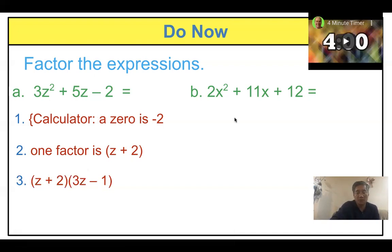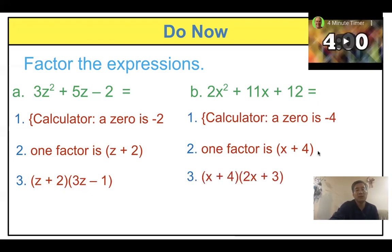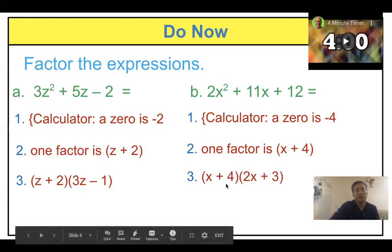Second one, same way — you put it into the function and you get the zero: negative four. Then your factor is x plus four. Your second factor: put the parentheses here, and x times what gives two x squared? Yes, two x. Four times what is 12? Three. So two x plus three. Your factors are x plus four and two x plus three.